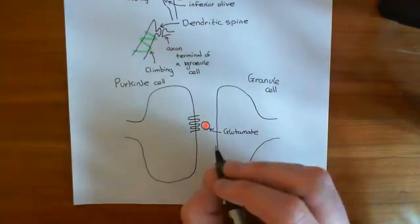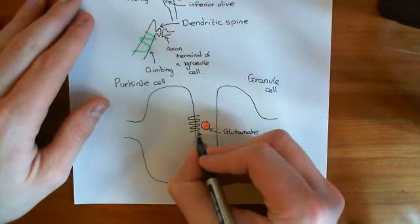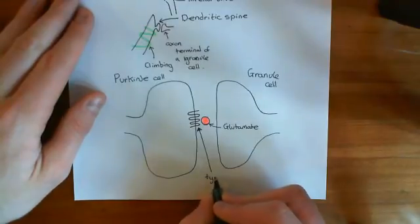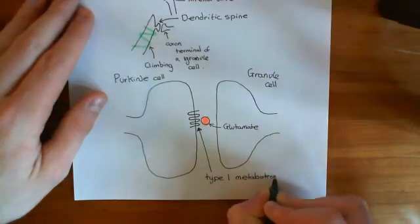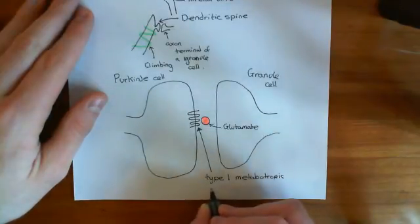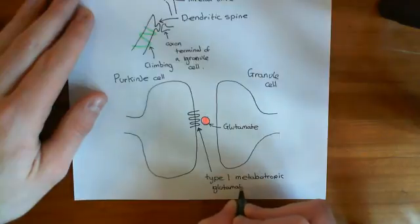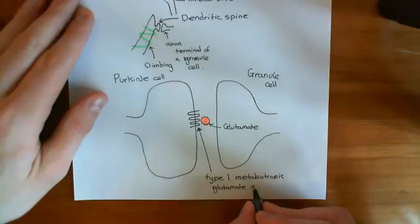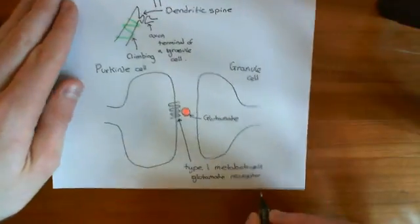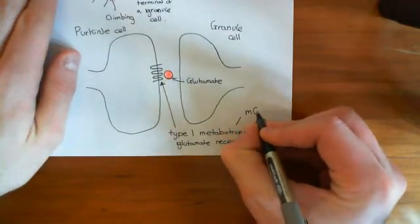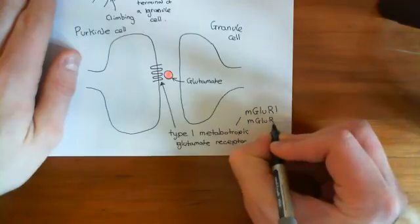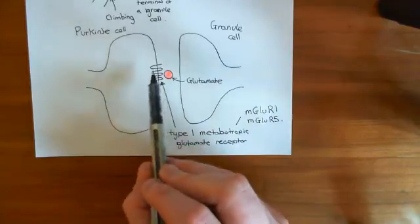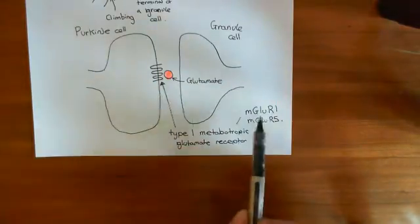A type 1 metabotropic glutamate receptor encompasses two of the eight metabotropic glutamate receptor genes. Those two genes are metabotropic glutamate receptor gene 1 and metabotropic glutamate receptor gene 5. So this specific receptor could have been made from mGluR1 or mGluR5 — both are counted as type 1 metabotropic glutamate receptors.